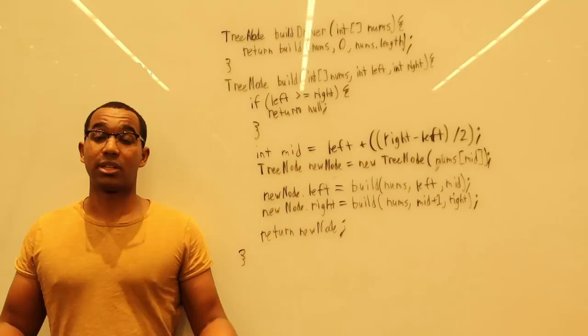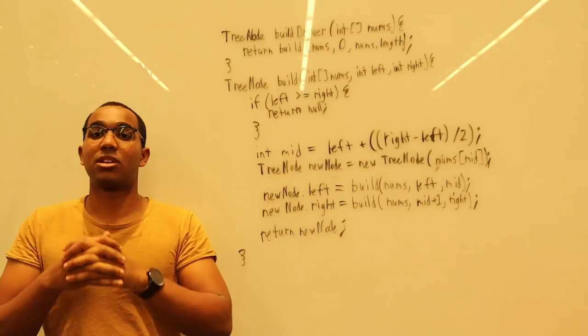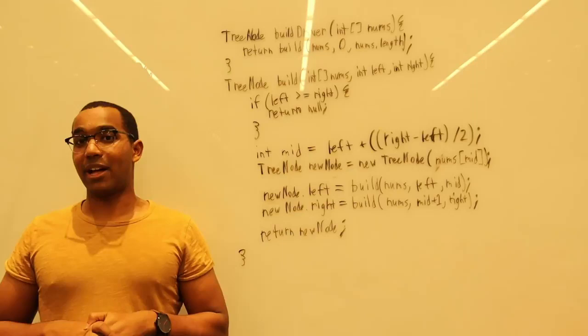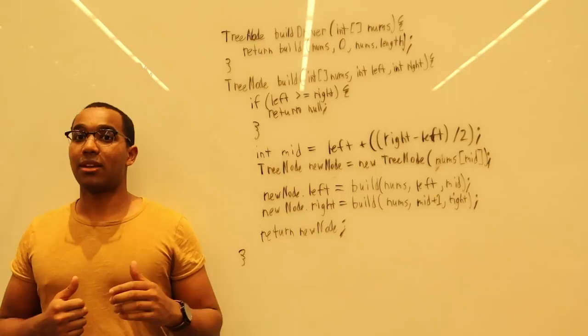The space complexity is going to be O(H). The height of the tree is the depth of the call stack in terms of stack usage for the algorithm. That is how you build a binary search tree that is balanced from a sorted list given to us. Code is in the description as well. If you want to check that out.